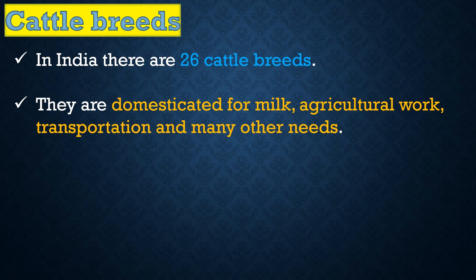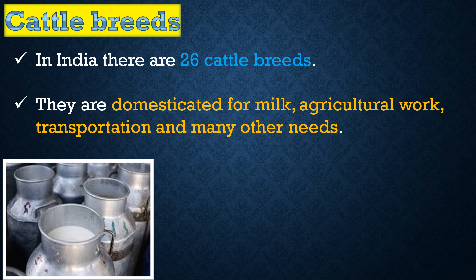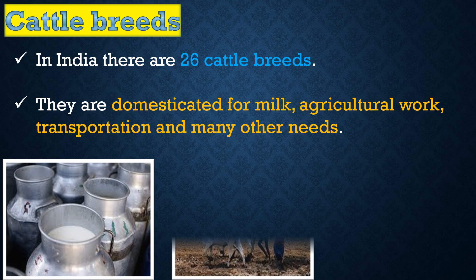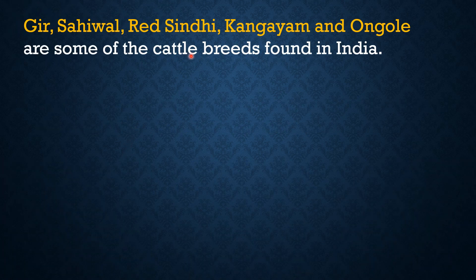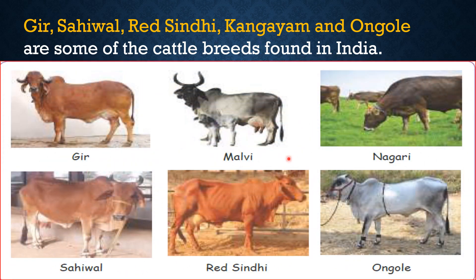Cattle breeds found in India include GYR, MALIBI, NAGARI, SAGIWAL, RED SINTHI, and ANKOL. These are found across various Indian states.